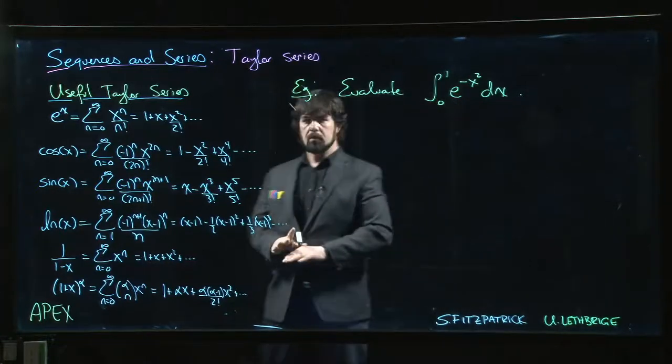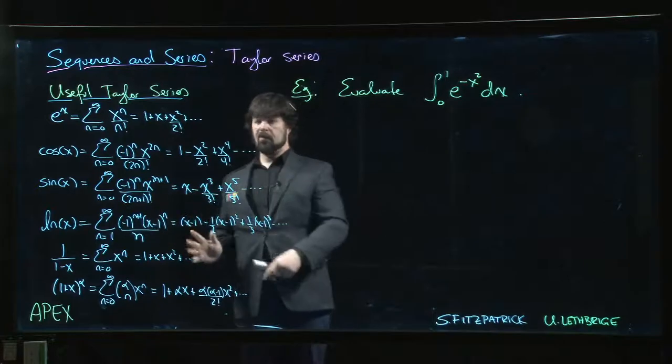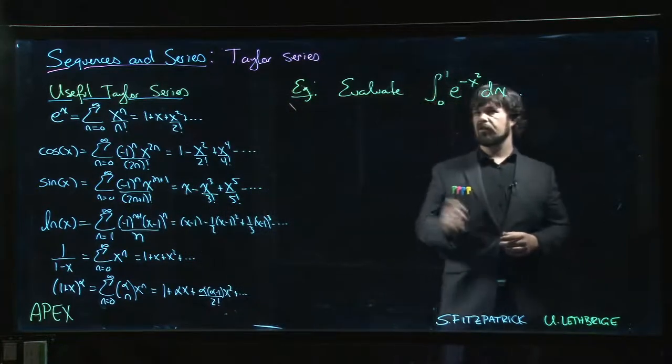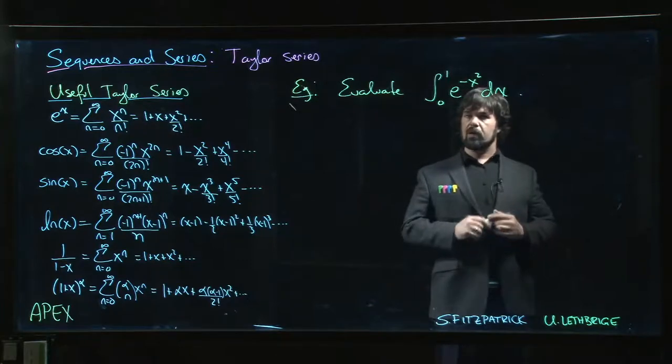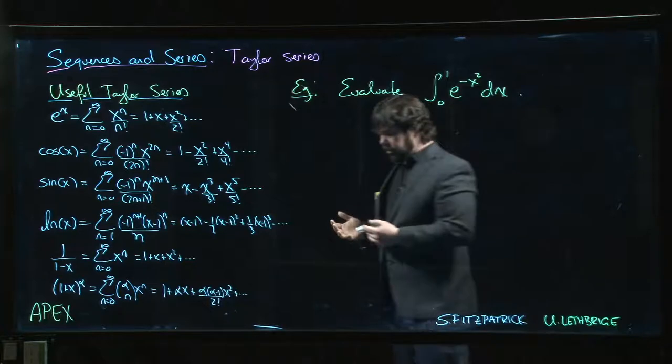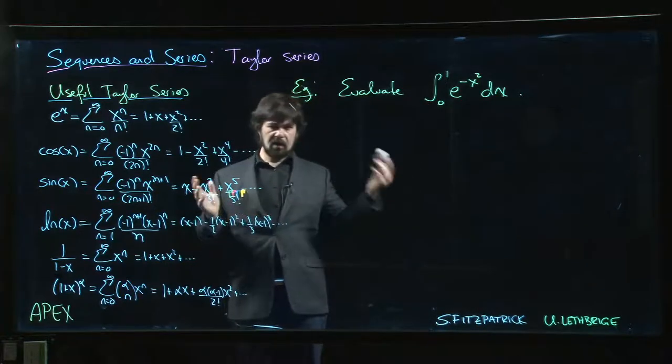All right, so let's do another example of things we can do now that we know a few Taylor series. We want to evaluate this integral from 0 to 1 of e to the minus x squared. Maybe this comes up when we're calculating something like the area under a standard normal curve or something like that. We're trying to calculate probability.